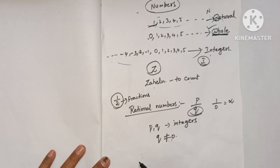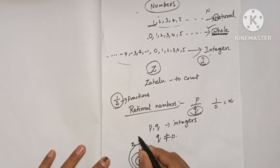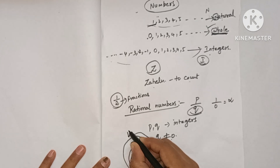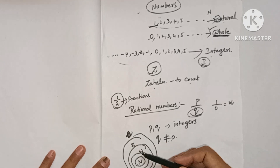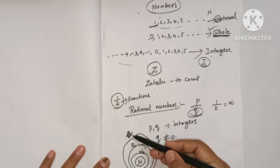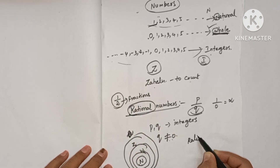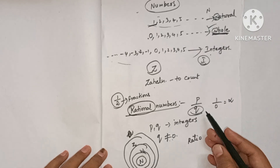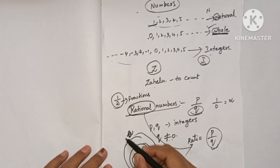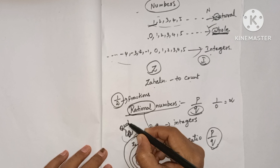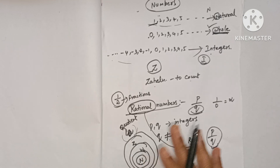All natural numbers are whole numbers, all whole numbers are integers, and all integers are rational numbers. Rational numbers are indicated by the letter Q. 'Rational' comes from the word 'ratio' — a comparison of two quantities by division — and Q comes from the word 'quotient'.